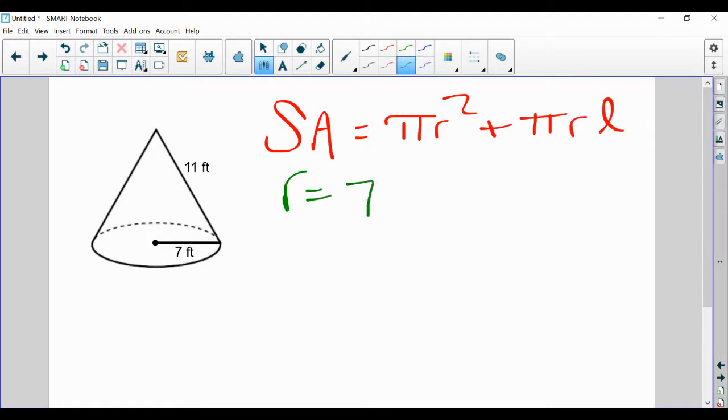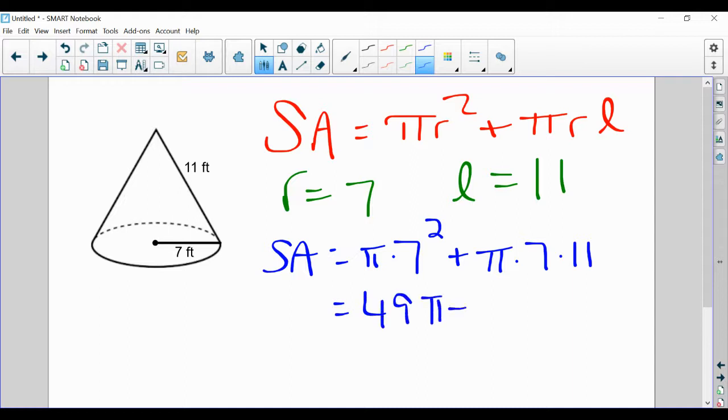I'm going to list what we know. We know the radius is seven. We know my slant height is 11. So we have everything. My surface area is going to be pi times seven squared plus pi times seven times 11.